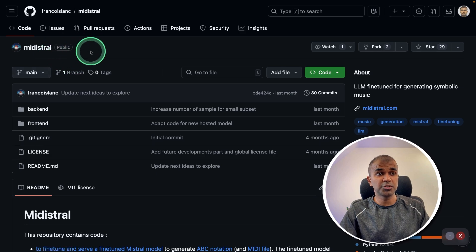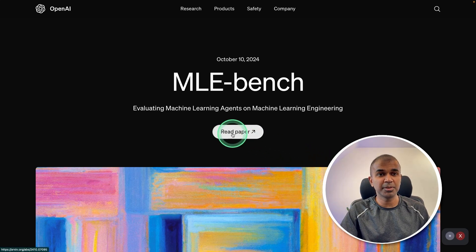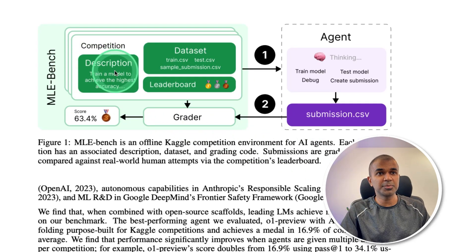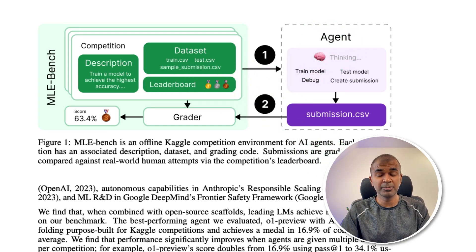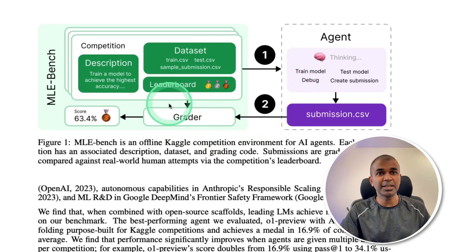Next, MLE Bench from OpenAI — evaluating machine learning agents on machine learning engineering. This is super cool because you're using AI to create another AI. Basically, you feed it a description, dataset, and a leaderboard, and the aim for this agent is to top the leaderboard — which is what's currently happening in the LLM arena. The agent fine-tunes or trains the model, tests it, submits the CSV, and that gets graded and placed in the leaderboard. It can repeat this process iteratively.